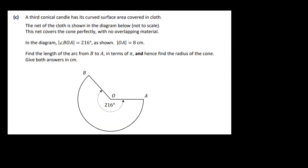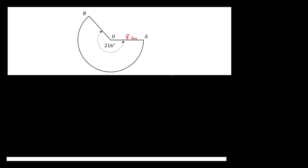A third conical candle has its curved surface area covered with cloth. The net of the cloth is shown in a diagram — it covers the cone perfectly with no overlapping material. The angle BOA is 216°, and OA is 8 cm. We need to find the length of the arc from B to A in terms of π, and hence find the radius of the cone.